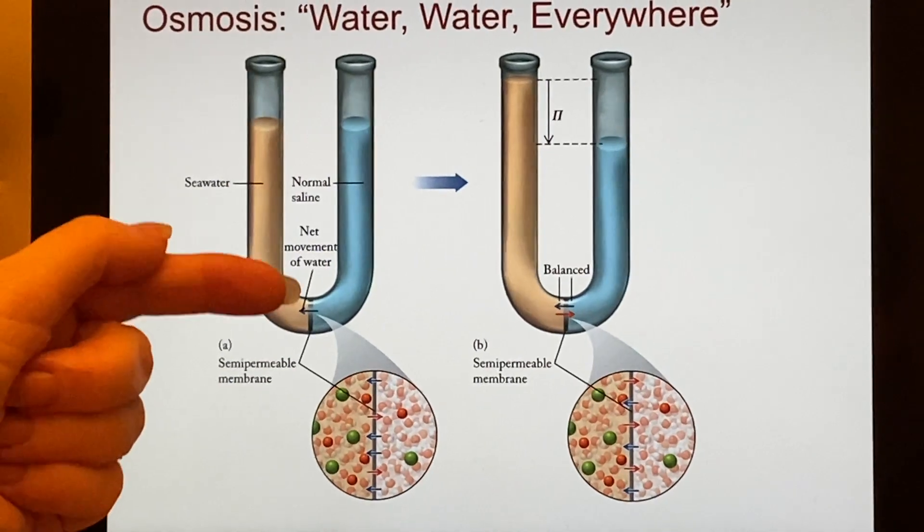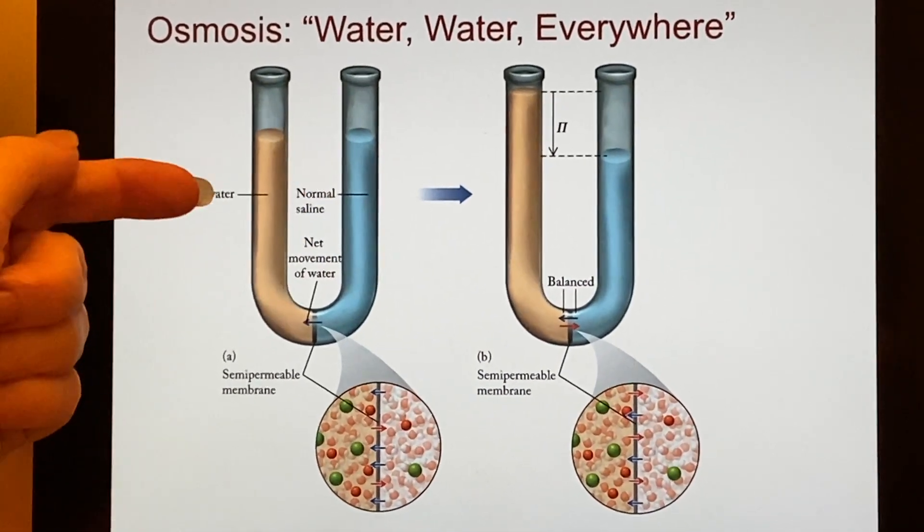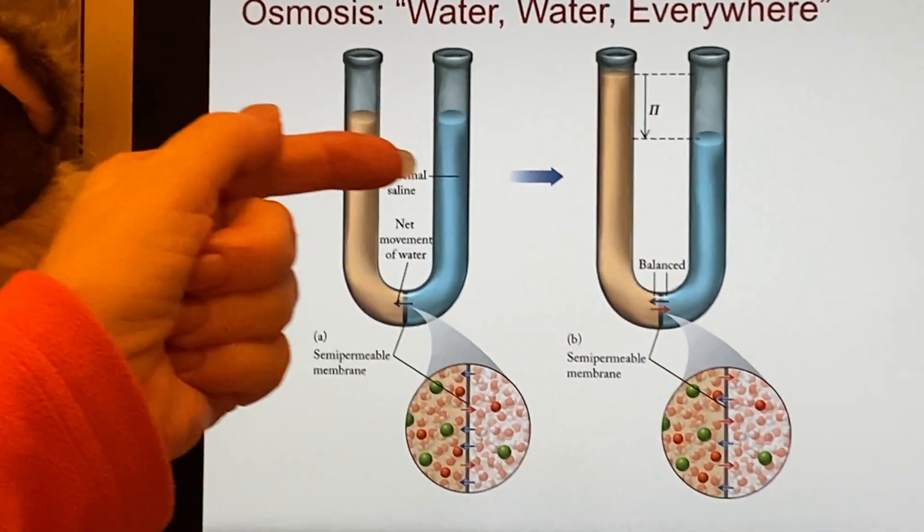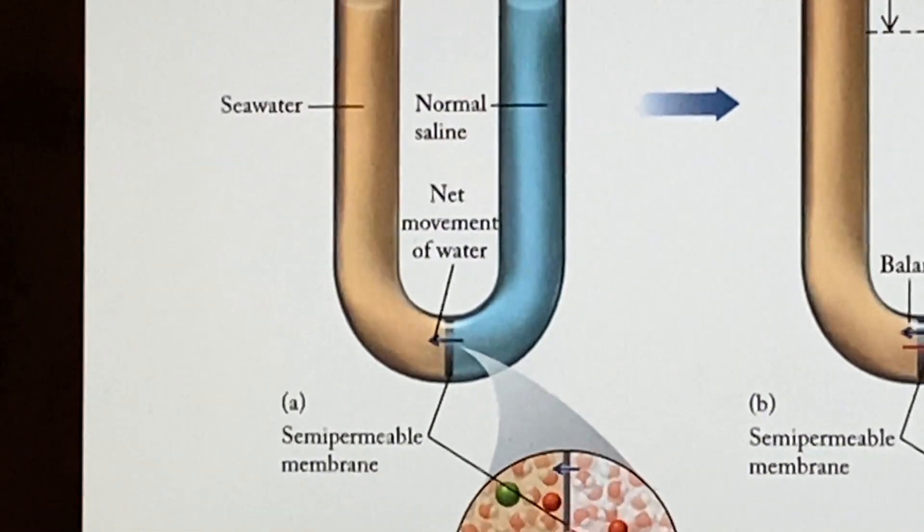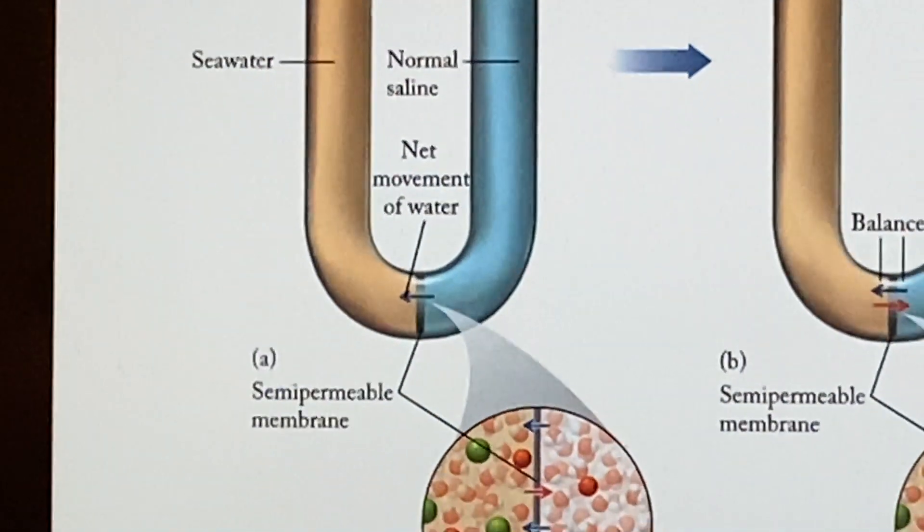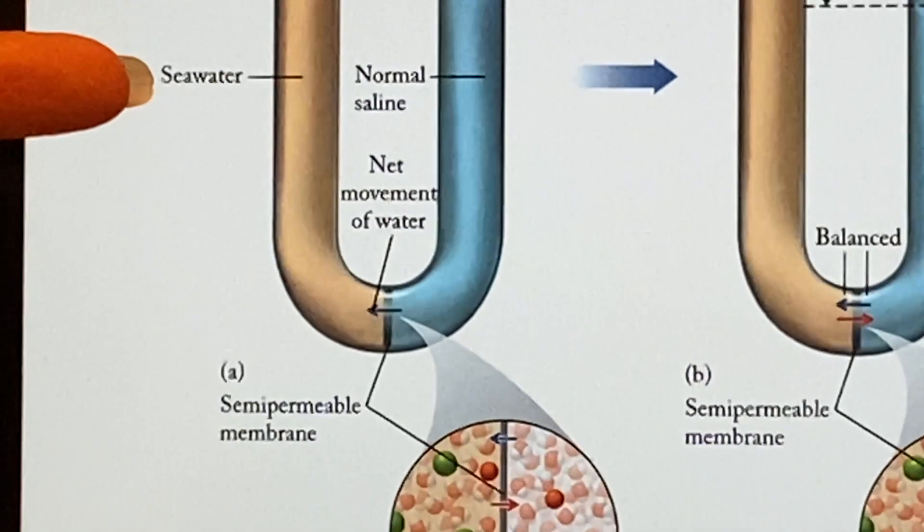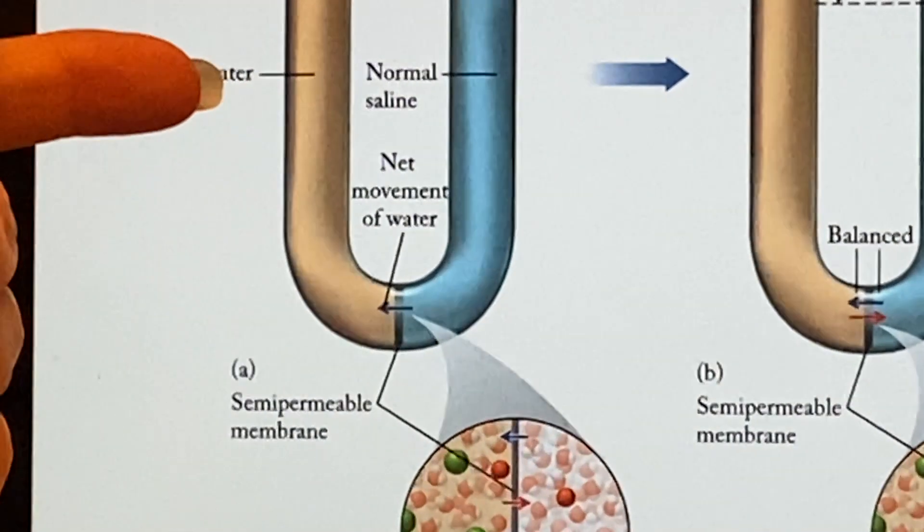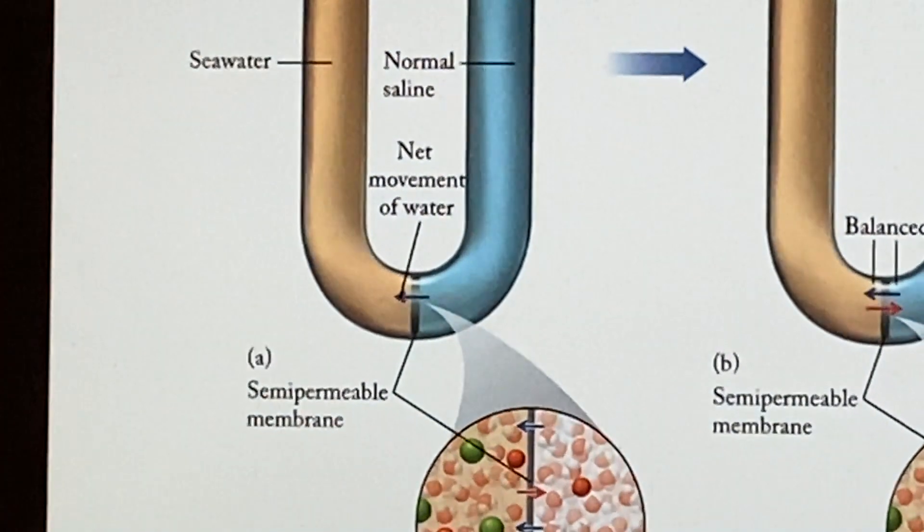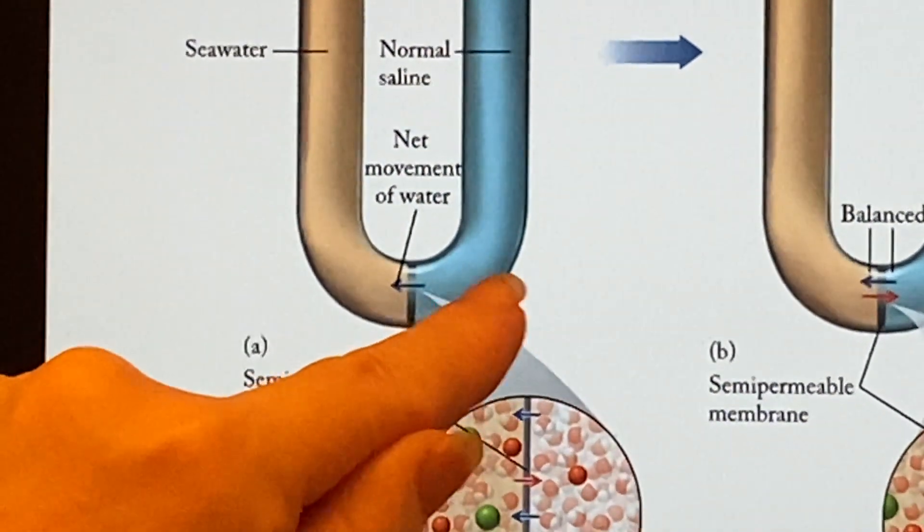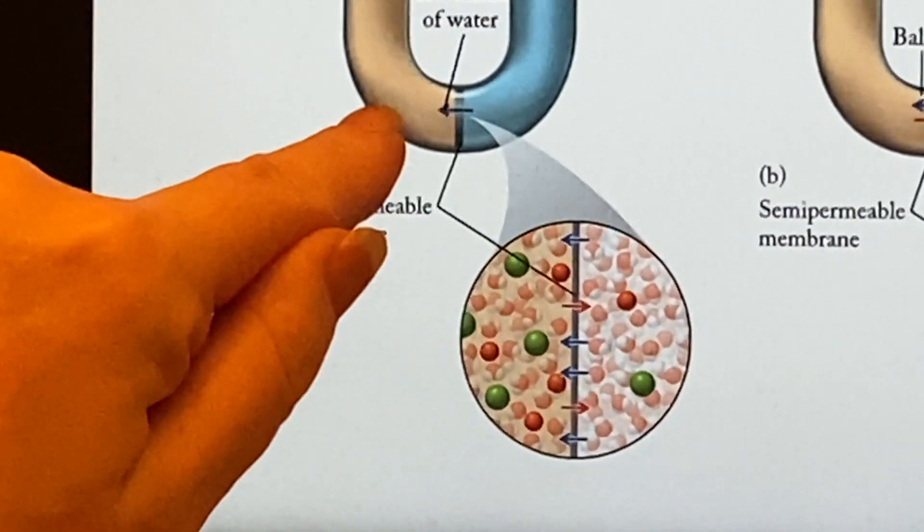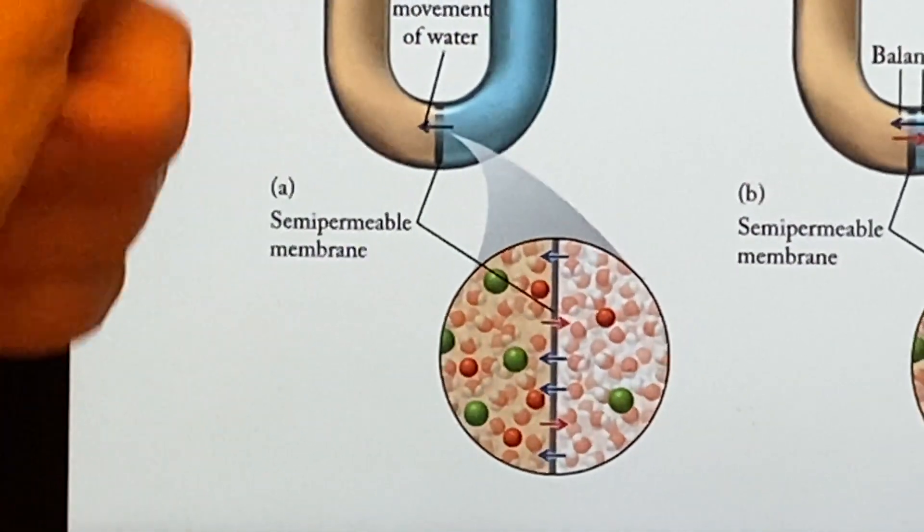On one side here we have an example where there's seawater and what is called normal saline, the type that would be the same level as what is in your body as far as saltiness. But the ocean is saltier—more salt, less water; more water, less salt. So at that point, since there's more water here and less over here, the water will move this way.